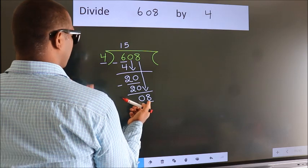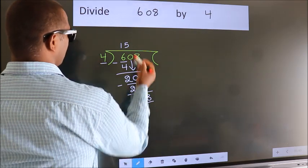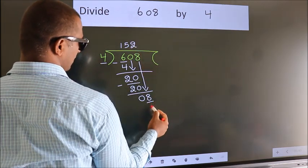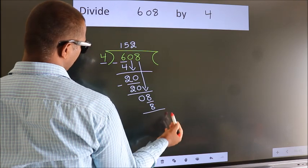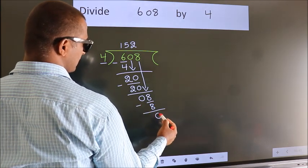When do we get 8? In the 4 table, 4 twos, 8. Now, we subtract. We get 0.